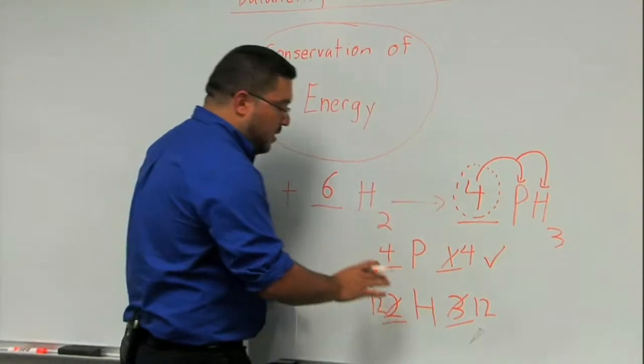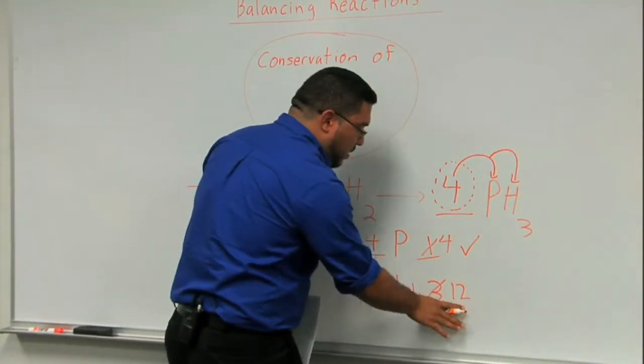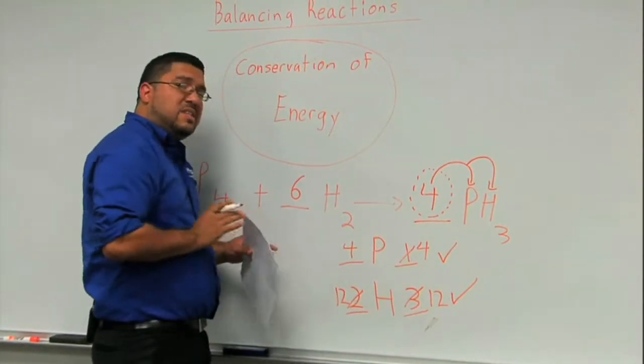The nice thing about this system is that you can be sure you're perfectly balanced because you can see you have twelve on the left and twelve on the right—so there's no confusion.